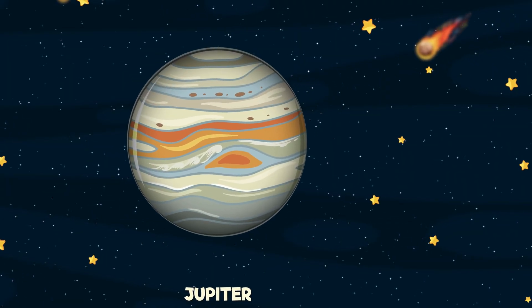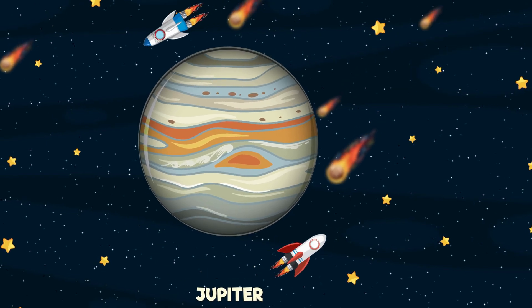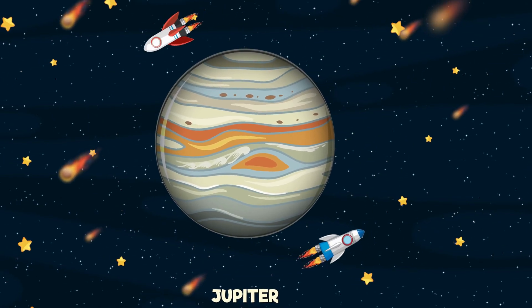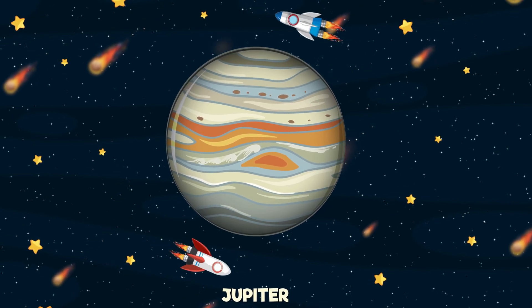Jupiter's giant, the king of the crew, a stormy big spot, red, white and blue. Moons like crazy, 79 or more. Gravity's strong, you'd weigh more.